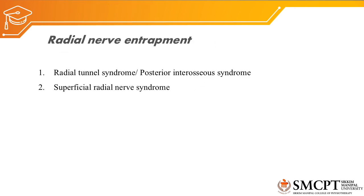Low radial nerve injury type 2 can be divided into two types: radial tunnel syndrome, also called posterior interosseous syndrome, which involves only the deep motor branch of the radial nerve, and superficial radial nerve syndrome, which involves only the superficial sensory branch.